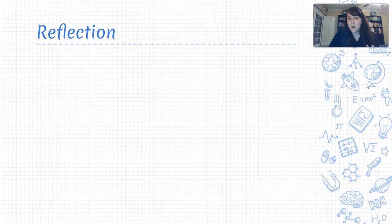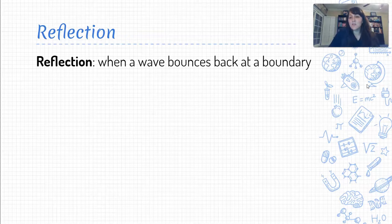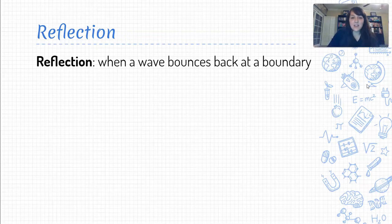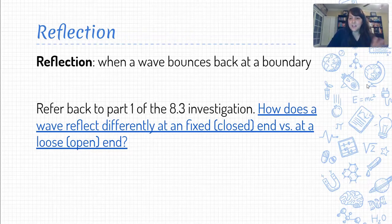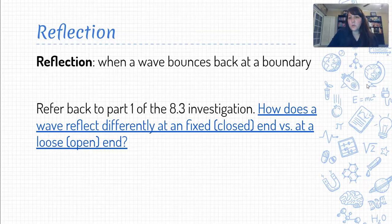The first one — probably the gentlest and easiest to understand — is the idea of reflection, which is the phenomenon where a wave bounces back at a boundary. It's going along through space, it hits something, and then the wave travels back again in the same direction that it came from. We started looking at that a little bit in the investigation, where you had a chance to try sending waves down along a string and see how they reflected back at different boundaries. So let's revisit how a wave reflects differently at a fixed or closed end versus a loose or open end.